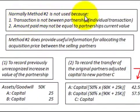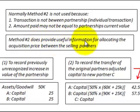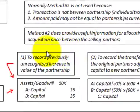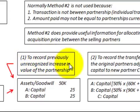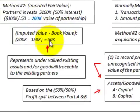That $50,000 increase represents either undervalued existing assets and/or goodwill traceable to the existing partners. Normally Method Two is not used because: one, the transaction is not between the partnership — it's an individual transaction; and two, the amount paid may not equal the partnership's current value. However, Method Two does provide useful information for allocating an acquisition price between the selling partners. Under Method Two there are two recordings to make. First, we record the previously unrecognized increase in the value of the partnership — that $50,000 increase based on imputed fair value over book value.